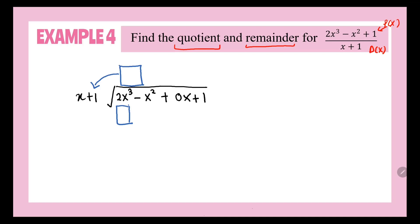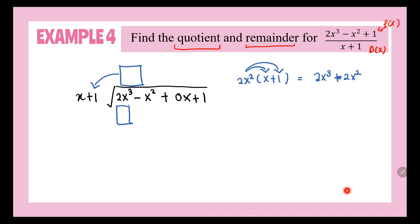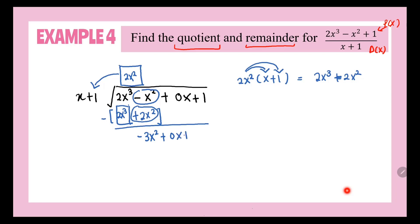First, we think: what multiplies x plus 1 so that we get 2x cubed? We want to get 2x cubed, so we think what multiplies x plus 1 gives us 2x cubed — that would be 2x squared. When 2x squared multiplies x, we get 2x cubed. So the term we write in the box is 2x squared. When we multiply with x plus 1, we get 2x cubed plus 2x squared. Then we subtract: 2x cubed minus 2x cubed gives 0, and negative x squared minus positive 2x squared gives us negative 3x squared plus 0x plus 1.